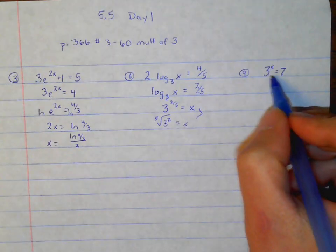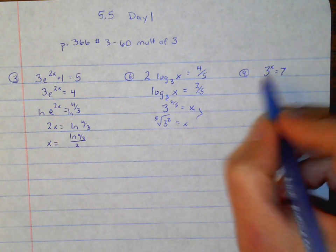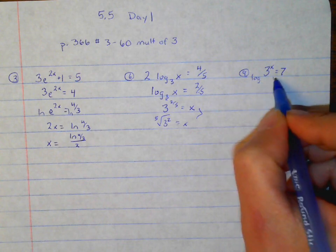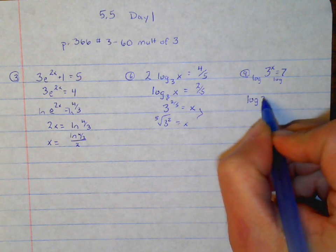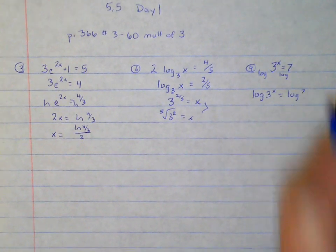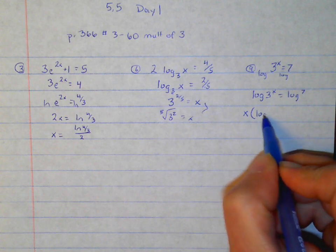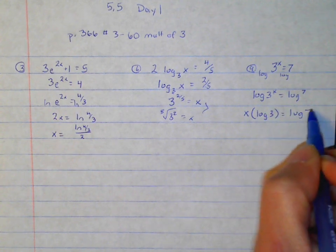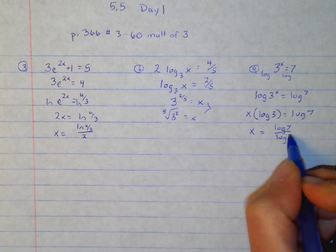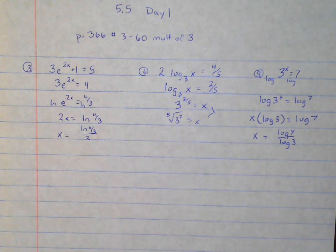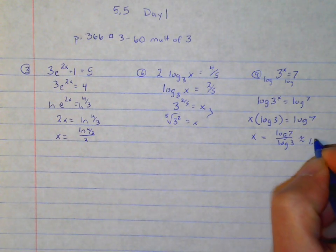Next one: if we just have an exponent here, remember we said we could take the log or natural log. I'm going to take the log function — I'll only use natural log when I have the e. So I know that log of 3 to the x is equal to log of 7. Using the power rule, take the x out front: x log 3 is equal to log 7. And lastly, to get x by itself, I divide by log 3. So log of 7 over log of 3, which is approximately 1.771.